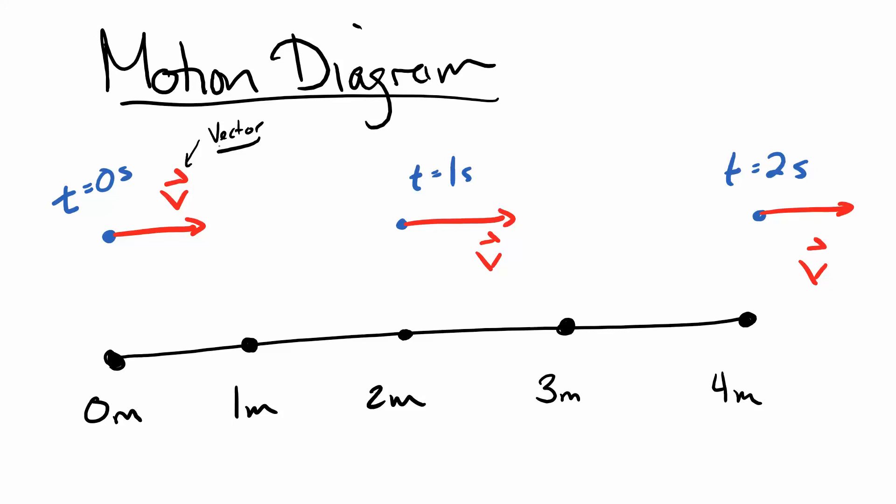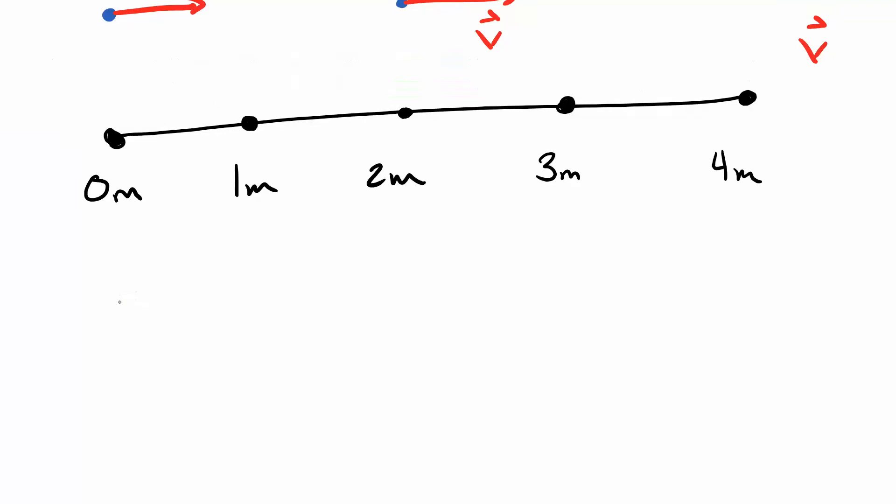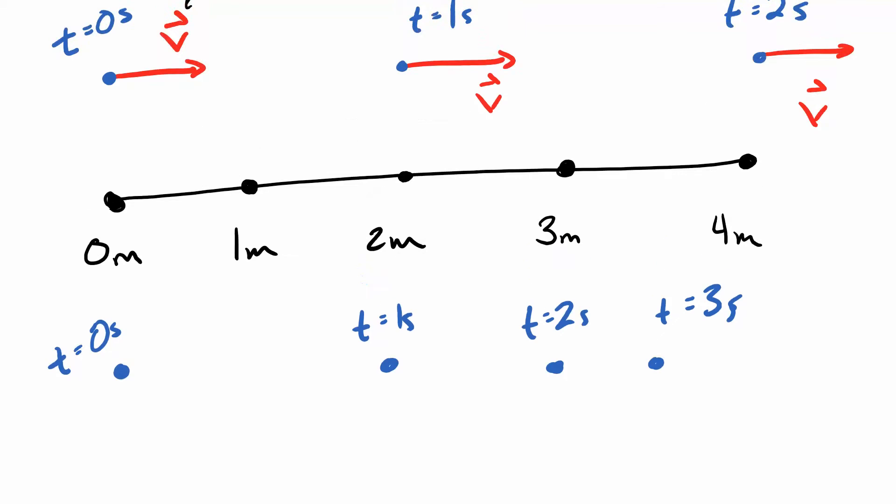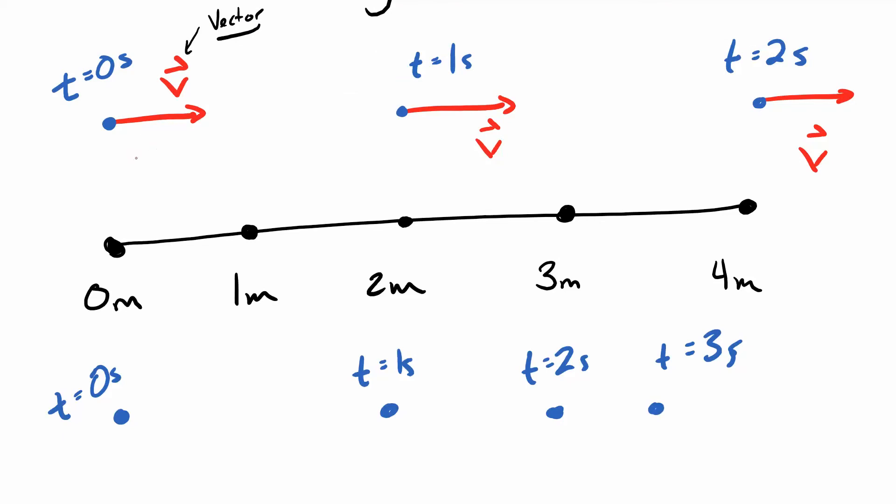All right, so that's not too bad. What if I wanted to tell a slightly different story though? What if instead this person started here, still again the zero meter mark, was over here at the one meter mark or the one second mark, was over here at the two second mark, was over here at the three second mark? How are these stories different?